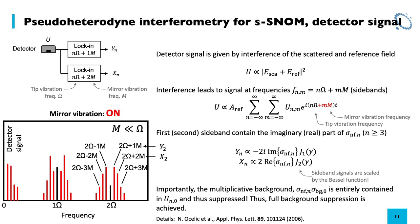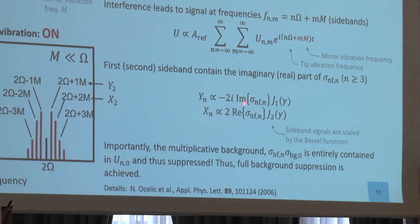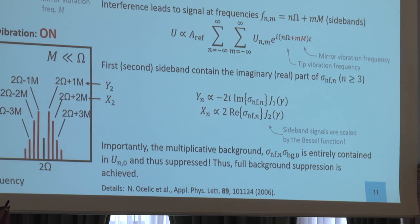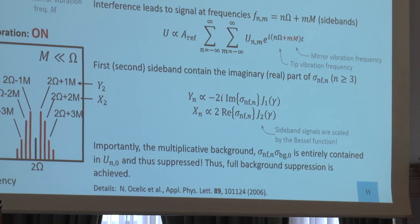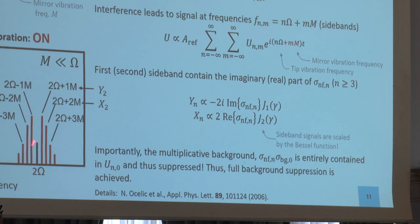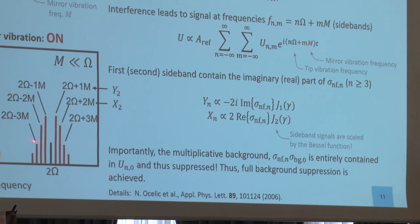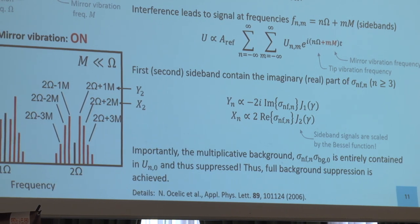There is one little detail: we have Bessel functions J1 and J2, which are functions of our phase modulation depth gamma. These multiply with our real and imaginary parts. To measure these, we have to calibrate our interferometer. Also worth noting: the multiplicative background appears in the black line — it is isolated there and does not appear in the red sidebands. This is why in pseudo-heterodyne, by looking just at the sidebands, we can suppress the multiplicative background.